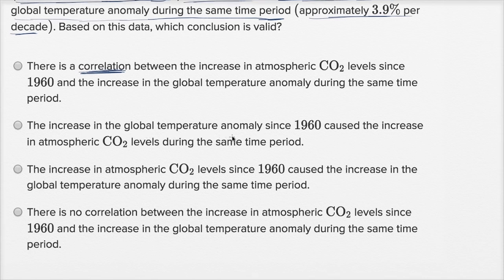The increase in the global temperature anomaly since 1960 caused the increase in atmospheric CO2 levels during the same time period. Well, no, we don't know that. We don't know whether there is causality here. Just by looking at that data of these two things moving together, you can't say that the temperature caused the CO2 to move up. This is one of the classic things. A lot of times when two things correlate, people want to show that there's some causality. But it's much harder to show causality than it is to show correlation. So I definitely don't like that.